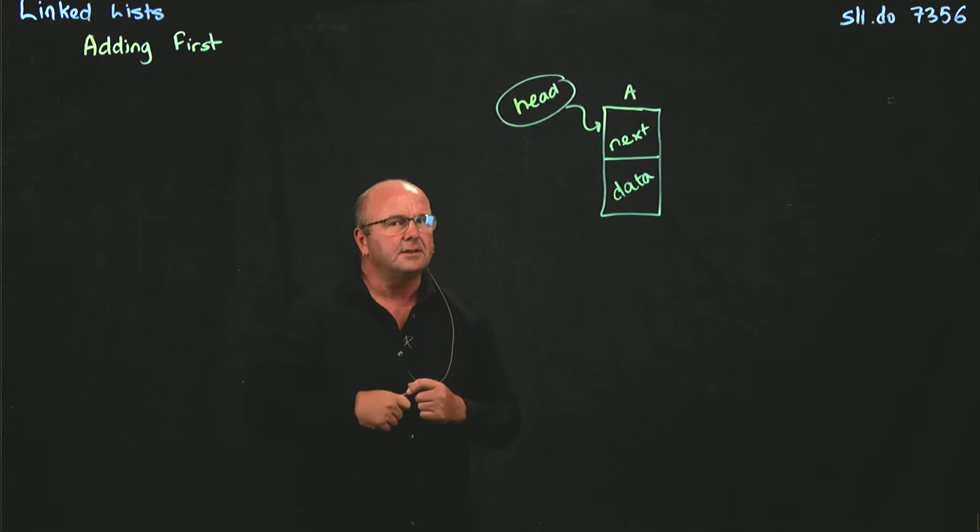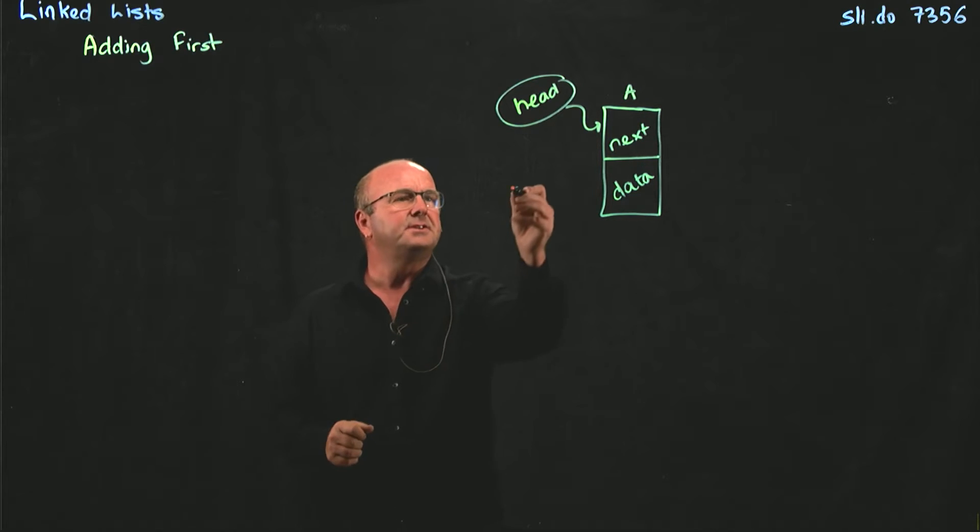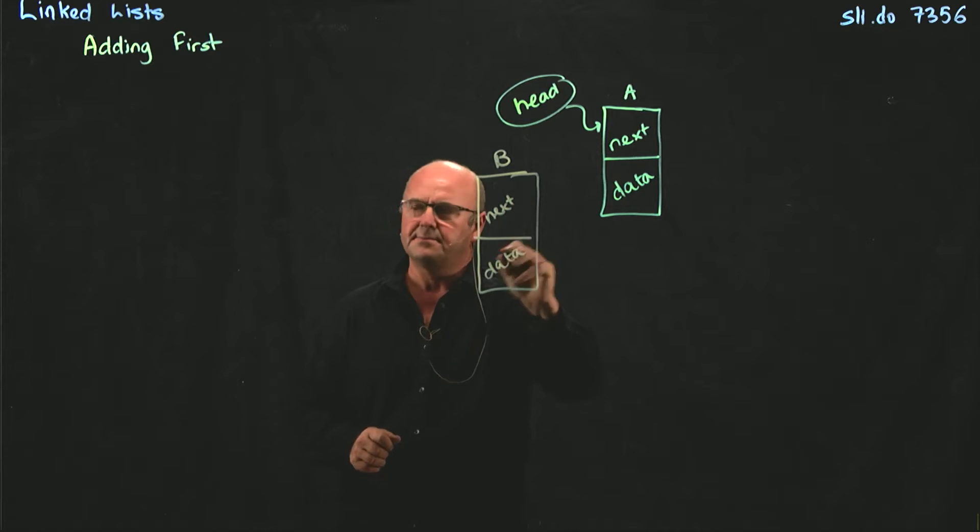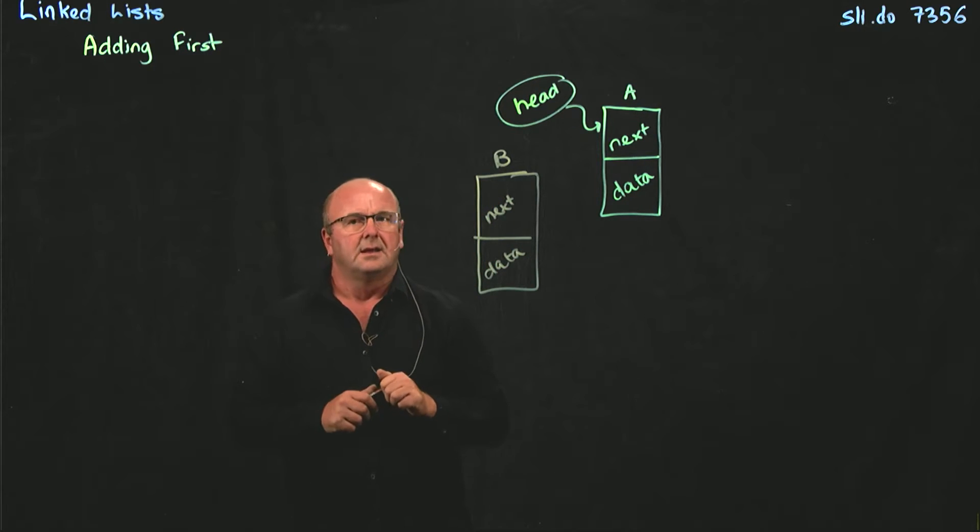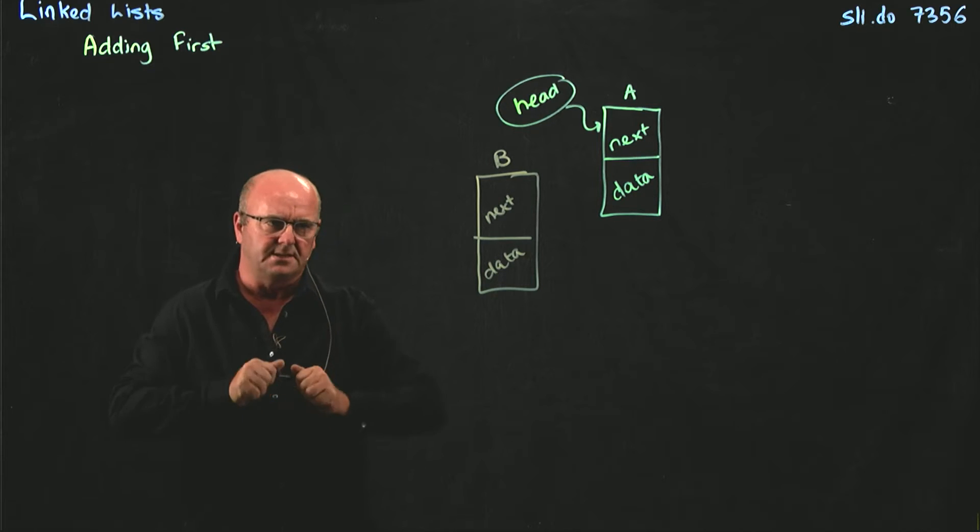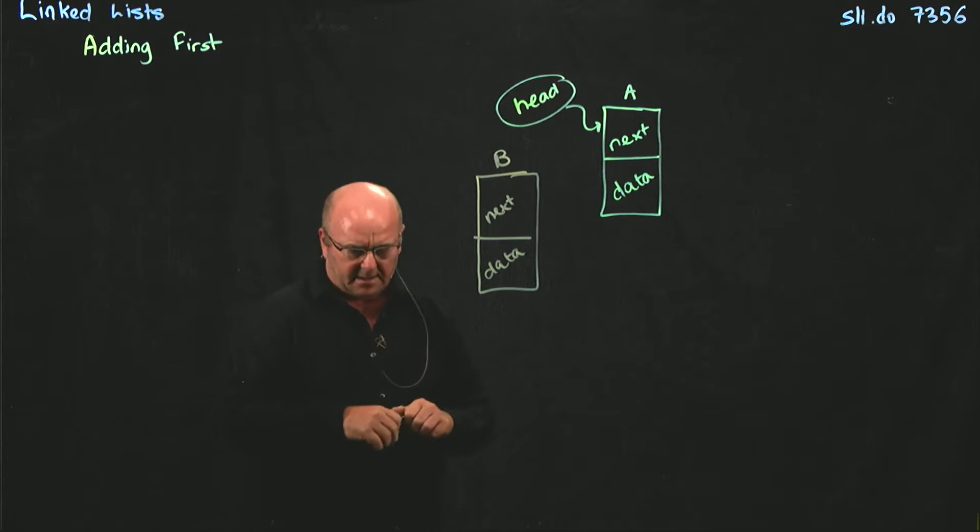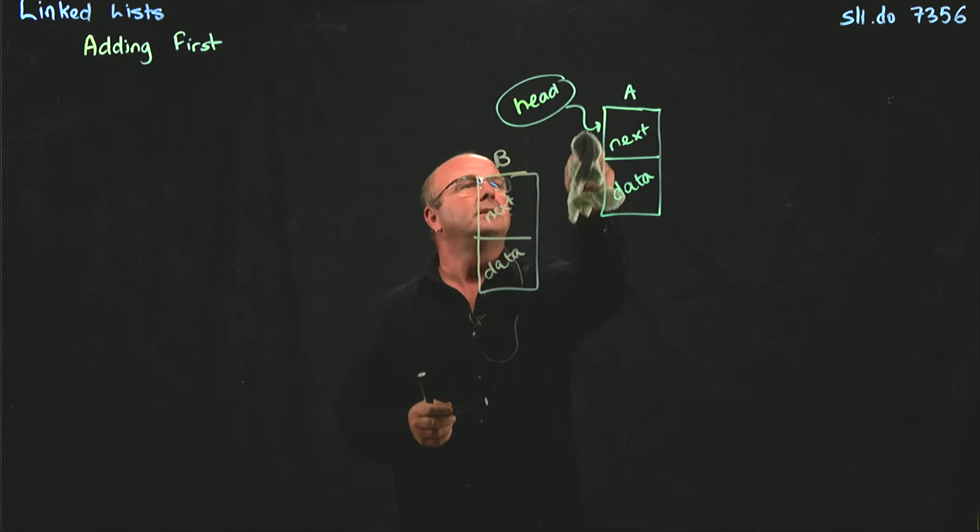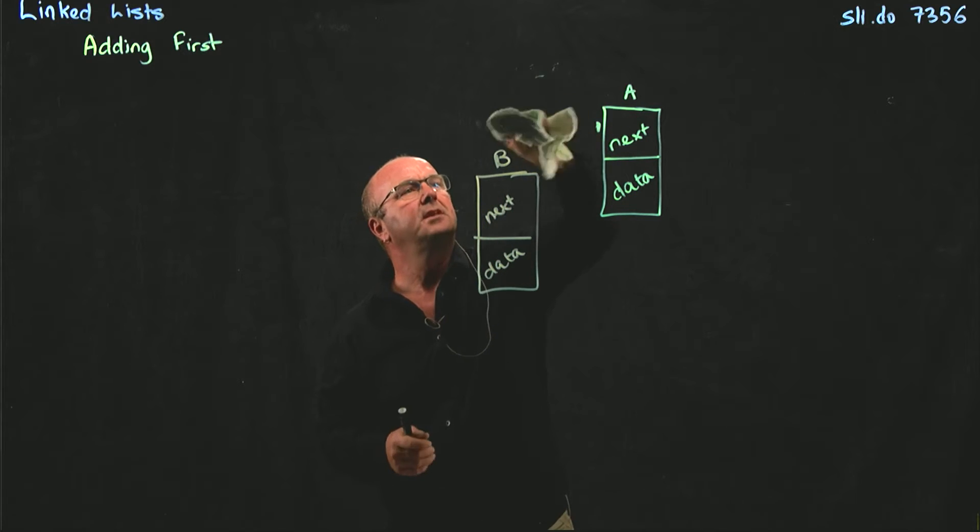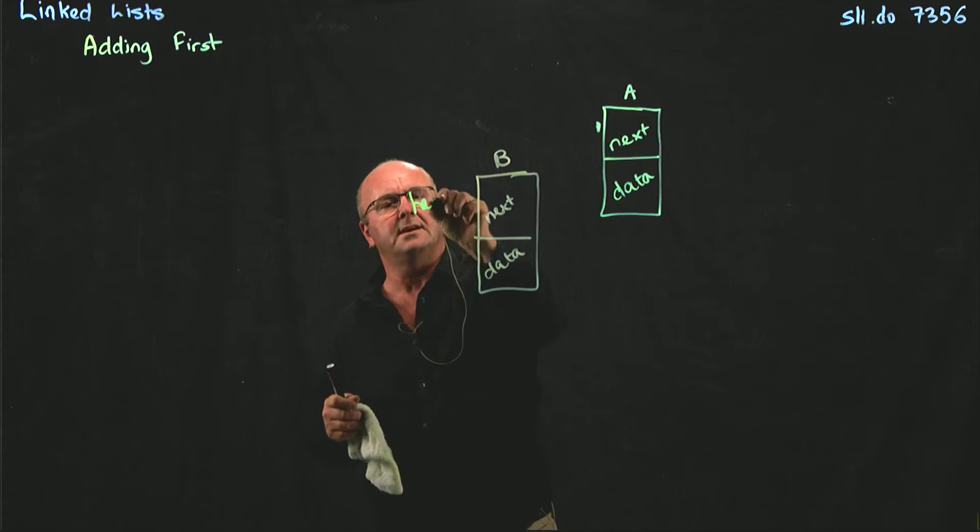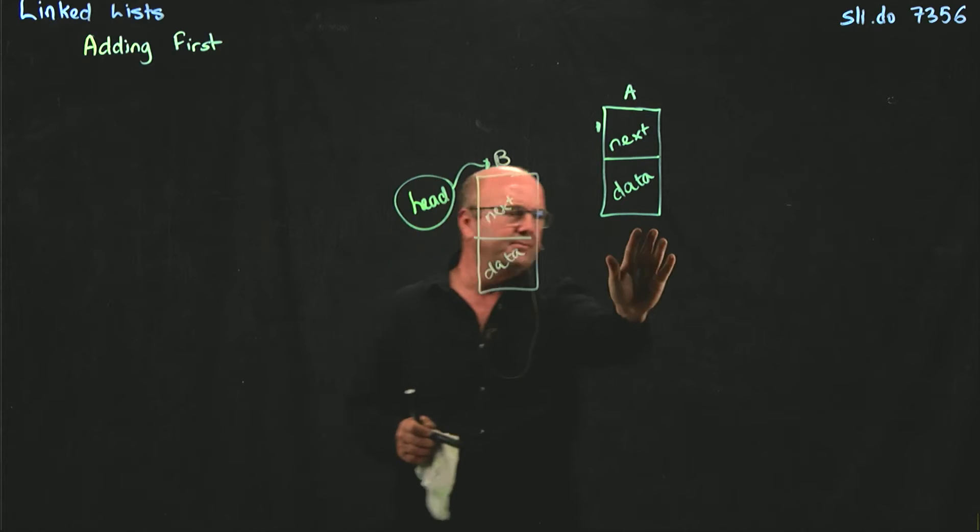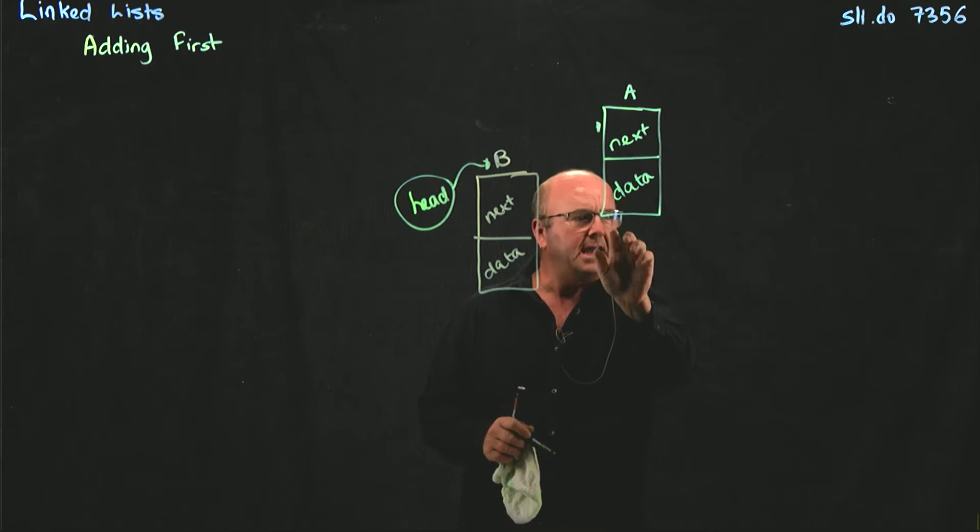Now we're going to add another node at the beginning of the list. The way that we do that is we create another node, here's next, and here's data. And what do we do next? If we move the head, instead, if we take our head and move it to point here, what points to A? Nothing. And what happens to A? It gets garbage collected, because nothing points to it anymore.